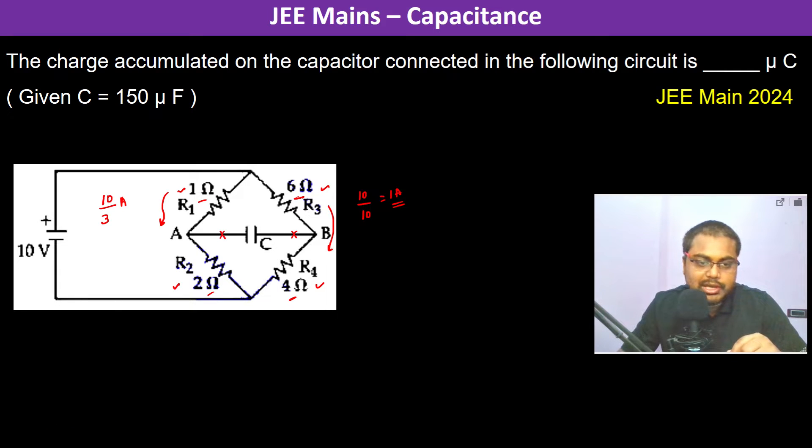The potential at point A is calculated starting from the 10 volt reference. The potential at A is 10 minus 1Ω times 10/3 amperes, which equals 20/3 volts.